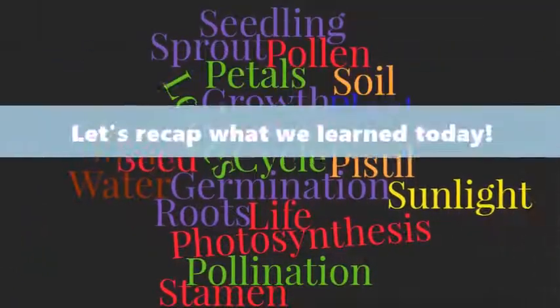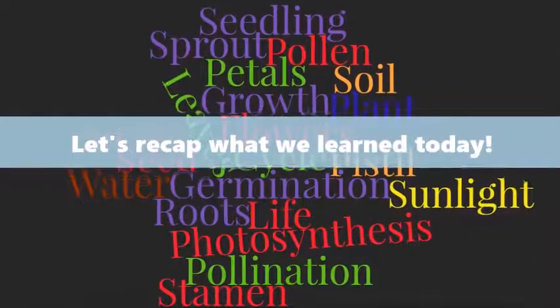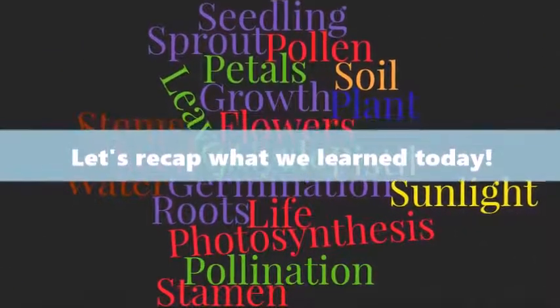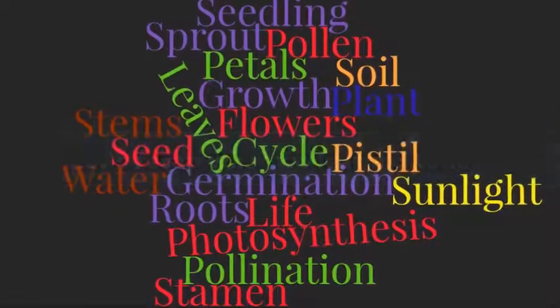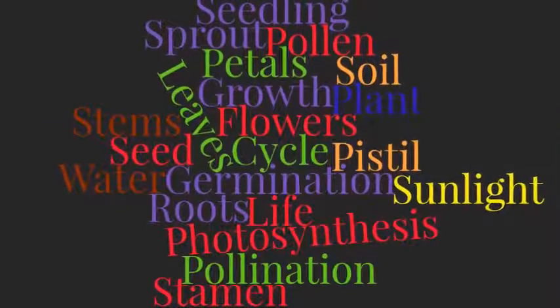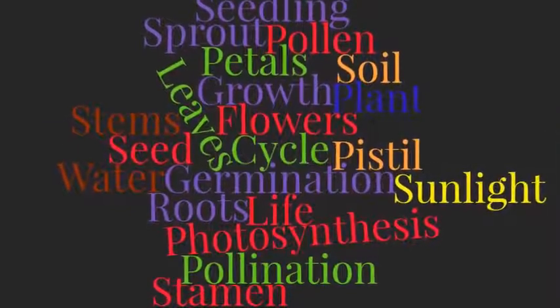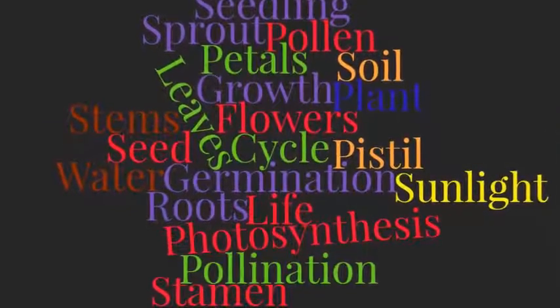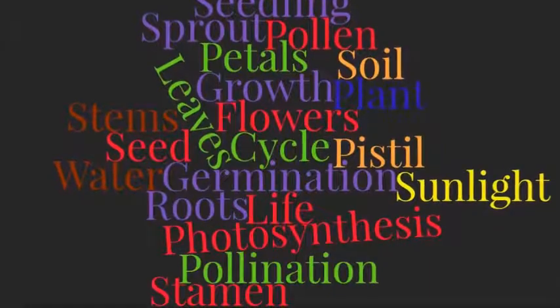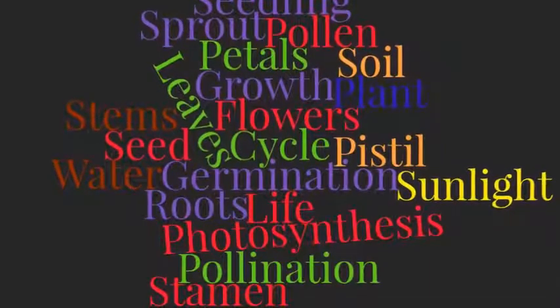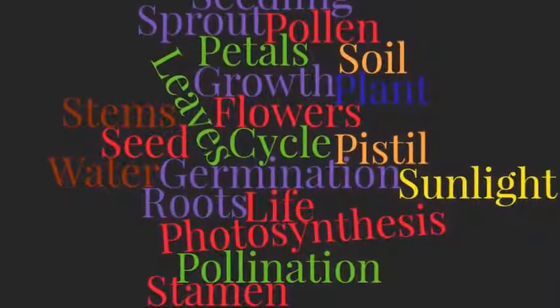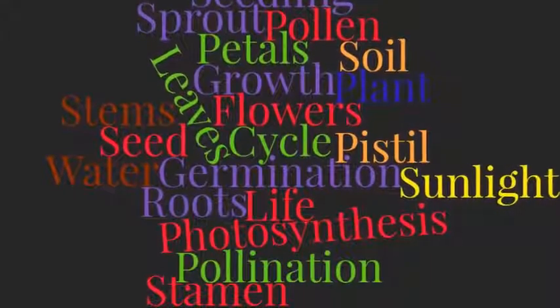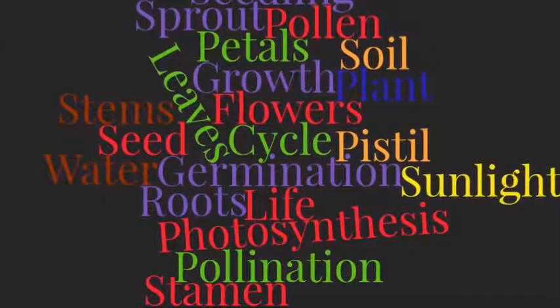Let's recap what we learned today. The six stages of the plant life cycle are the seed, germination, root and stem, leaves, flowers, and pollination.